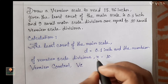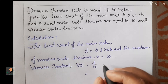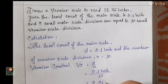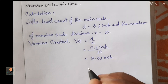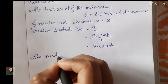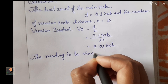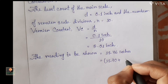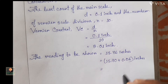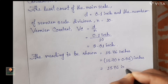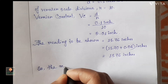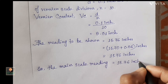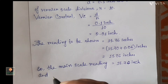So the Vernier constant VC equals 0.1 divided by 10, which equals 0.01 inch. The reading to be shown is 15.76 inch, which we can read as 15.70 plus 0.06 inch.